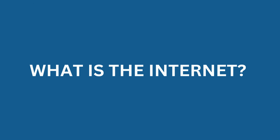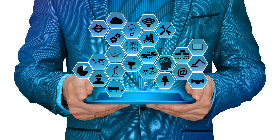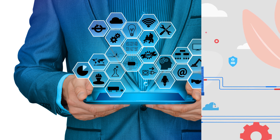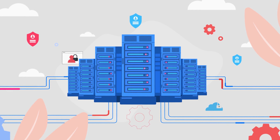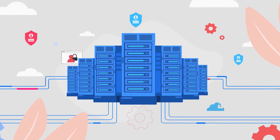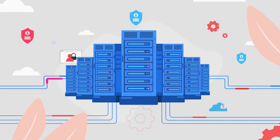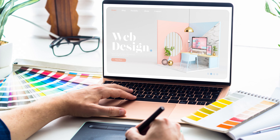What is the internet? The internet is a global network of connected devices that allow people to communicate, access information, and share data. It consists of millions of computers, servers, routers, and other devices connected via a network of cables and wireless signals. The internet is decentralized, meaning there is no central authority controlling it.